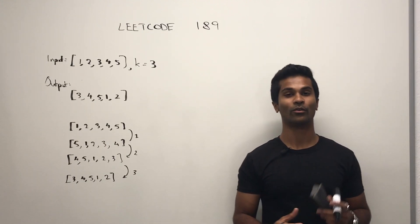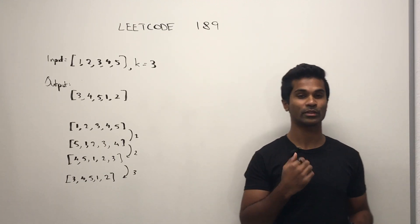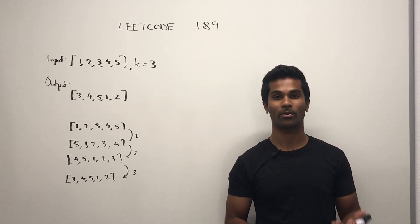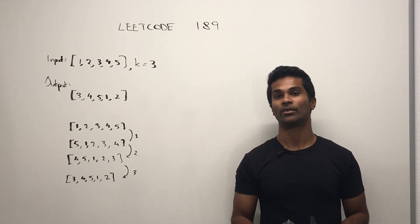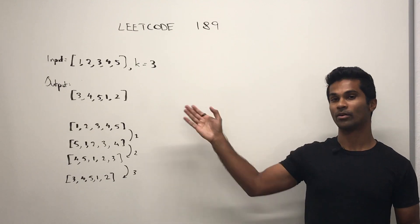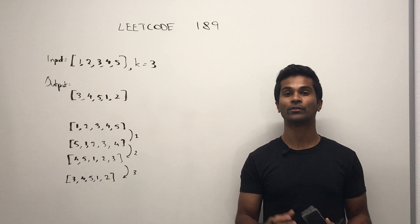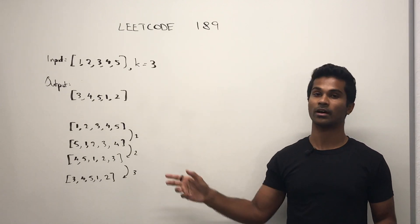What's up everyone. Today we're going to go over LeetCode 189 rotate array. I made a video for this a while back but the video was subpar so I'm remaking it. The input is going to be an array and an integer, and the output needs to be the same array after it's been rotated to the right k number of times.